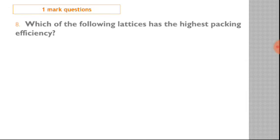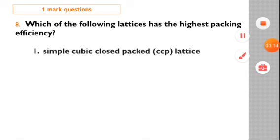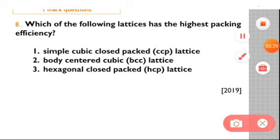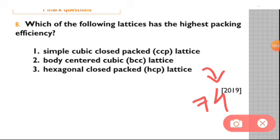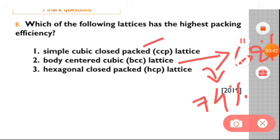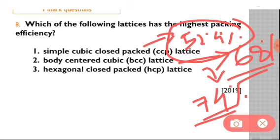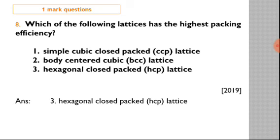Question number eight from 2019: which has the highest packing efficiency? Options are simple cubic CCP, body-centered cubic BCC, and hexagonal close-packed HCP. The packing efficiencies are: HCP is 74%, BCC structure is 68%, and CCP is 52.4%. So the highest packing efficiency is hexagonal close-packed. Our answer will be hexagonal close-packed HCP.